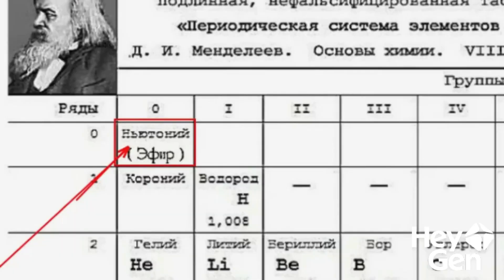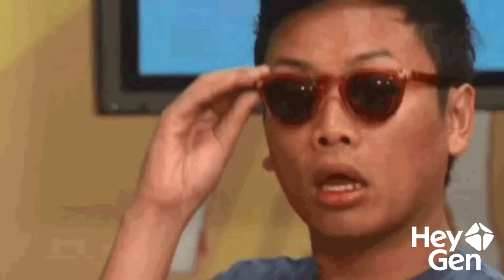Is it true that in the original version of Mendeleev's table there was an element that represented ether? Is it true that coronium and Newtonium were also there? And why did the reptilians erase this from Mendeleev's table, thus misleading everyone? Was it really to hide the existence of ether from people? Let's examine the issue in detail — I'm sure it will be interesting and useful.